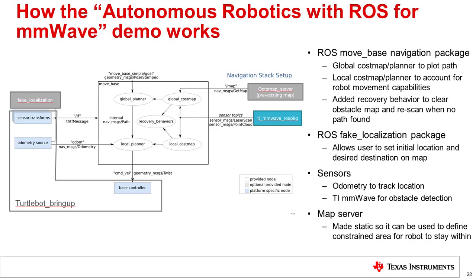The figure on the left shows the major components in the Autonomous Robotics with ROS for mmWave lab. The central block is the ROS movebase navigation package, which is part of the ROS standard navigation stack. Within the movebase package are several subcomponents. The global cost map and planner: a cost map in ROS is an occupancy grid used to track obstacles in the map. The planner is a path planner used to plan a path from where the robot currently is to where it wants to go, avoiding obstacles that are marked in the cost map. The global cost map and path planner are used to plot a high-level or overall path for the robot to follow.